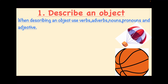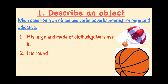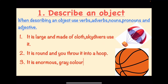When describing an object, use verbs, adverbs, nouns, pronouns, and adjectives. Here's the first object riddle: It is large and made of cloth, and skydivers use it. Does anybody know what this is? Five second timer — 1, 2, 3, 4, 5 — time's up! This is a parachute, because it's made of cloth, it's large, and skydivers use it when jumping to the ground.